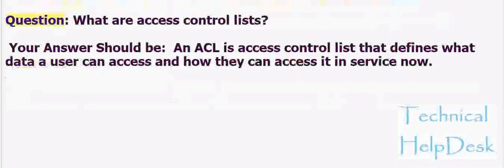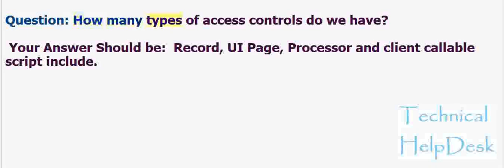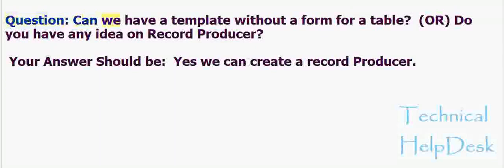Question: What are Access Control Lists? Your answer should be: an ACL is an Access Control List that defines what data a user can access and how they can access it in ServiceNow. Question: How many types of access controls do we have? Your answer should be: record, UI, page, processor, and client-callable script include.